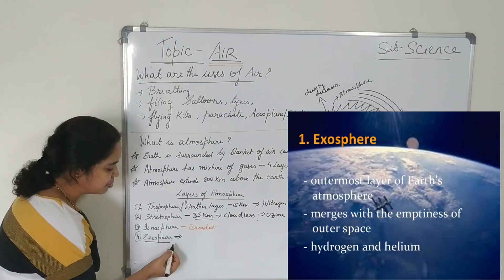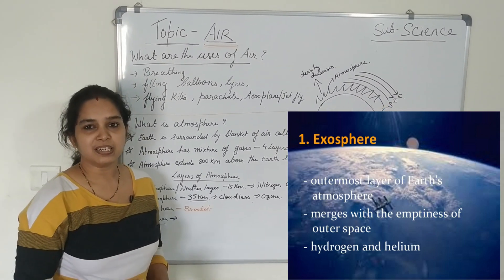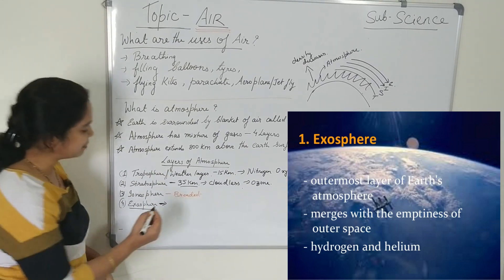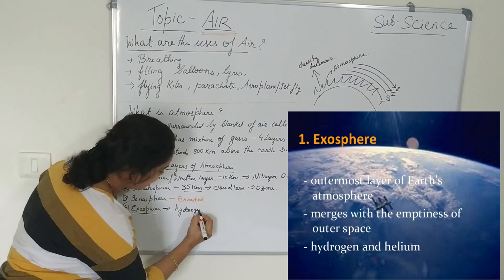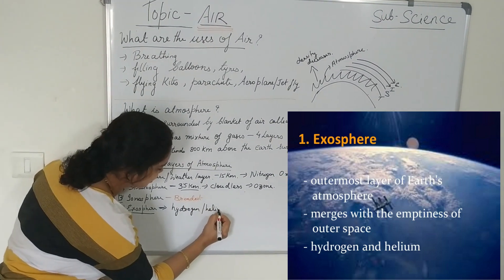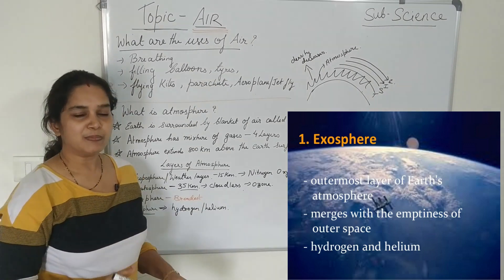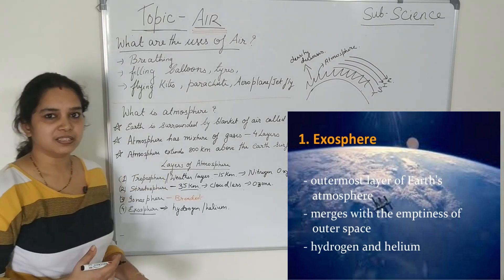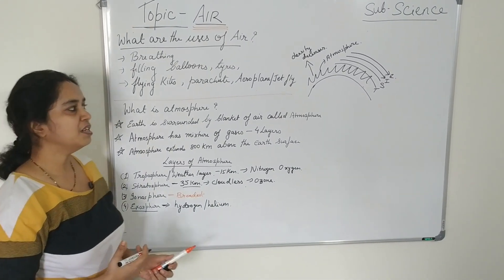Exosphere is the outermost layer and exo means outer. So it contains very little air. Mostly it contains helium and hydrogen gas. Hydrogen and helium gas is present in this layer. And it is the outermost layer. But it still has the gravitational pull of the earth. These are all about the four layers of the atmosphere.